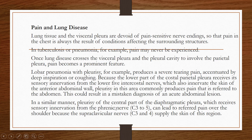Similarly, pleurisy of the central part of the diaphragmatic pleura, which receives sensory innervation from the phrenic nerve, can lead to referred pain over the shoulder, because the supraclavicular nerves supply the skin of that region and the root values of the phrenic nerve and the supraclavicular nerve are the same — C3 to C5 for the phrenic nerve, and C3 and C4 for the supraclavicular nerves.